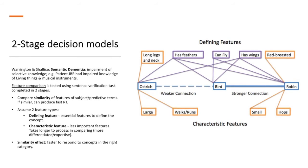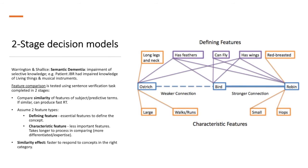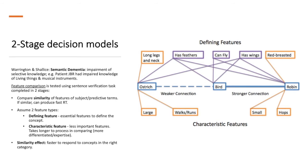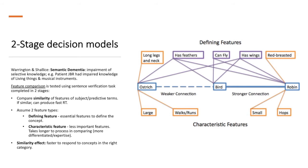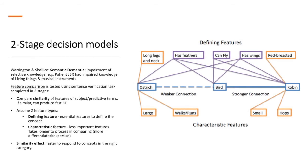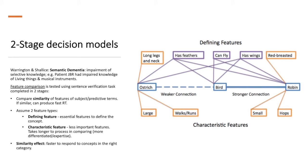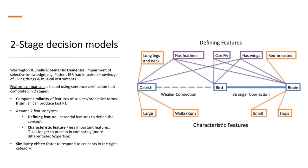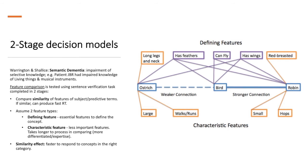The first stage involved comparing the similarity of features of the subject and predictive terms. If similar, it tended to produce a faster reaction time. The second stage was to assume that there were two different feature types, such as defining feature, which was essential features to defining the concept,